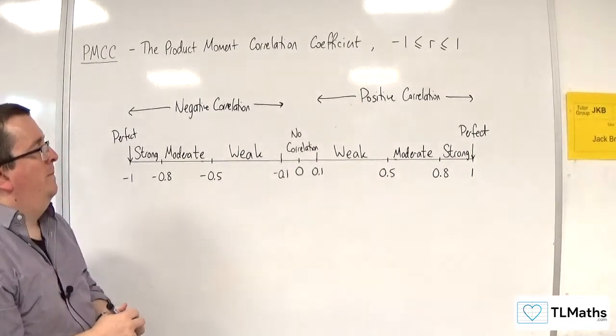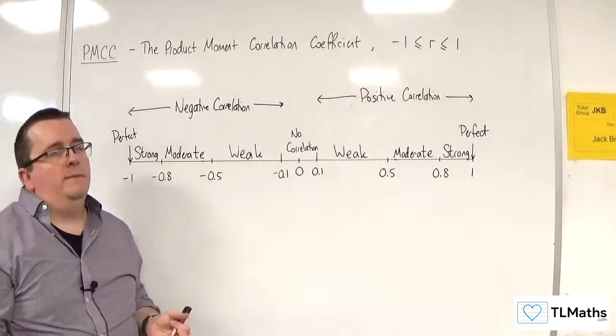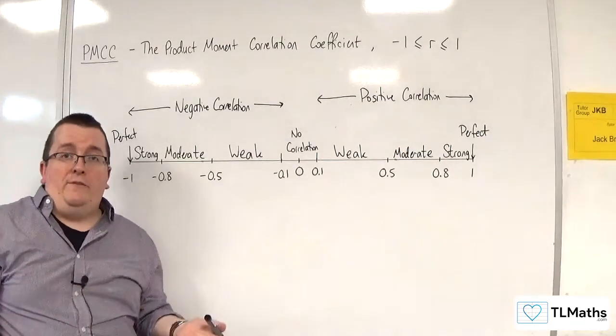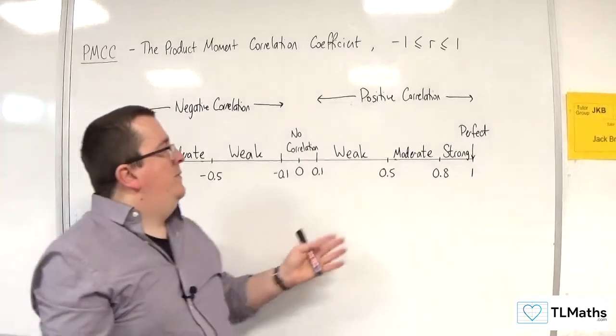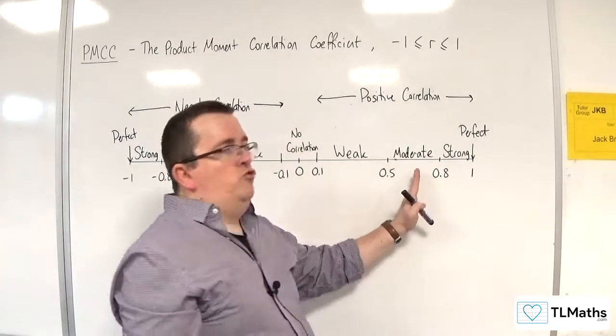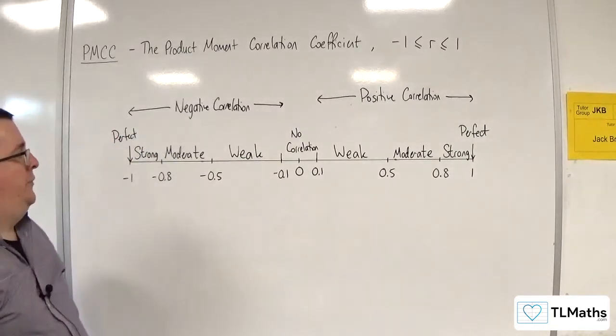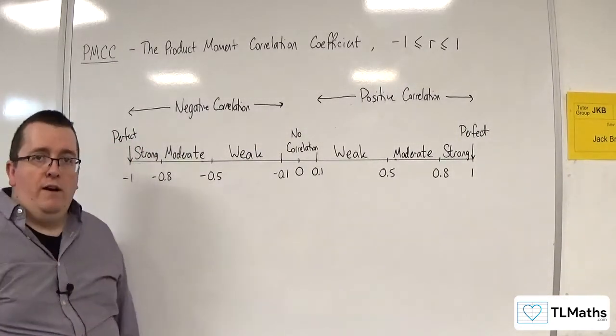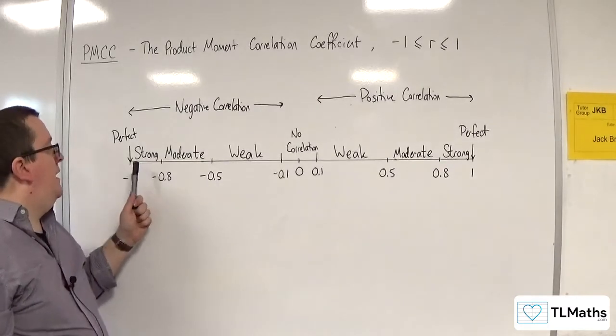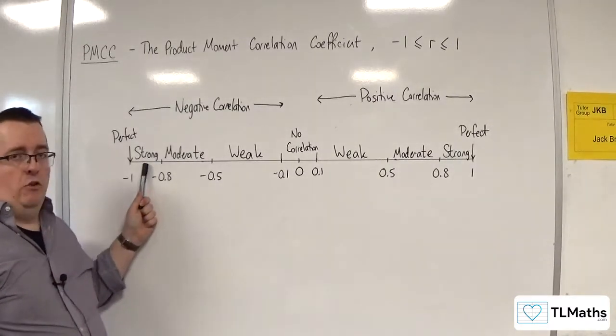So if you've got something like 0.67, then that would be a moderately strong positive correlation. If you've got minus 0.9, then that is a strong negative correlation.